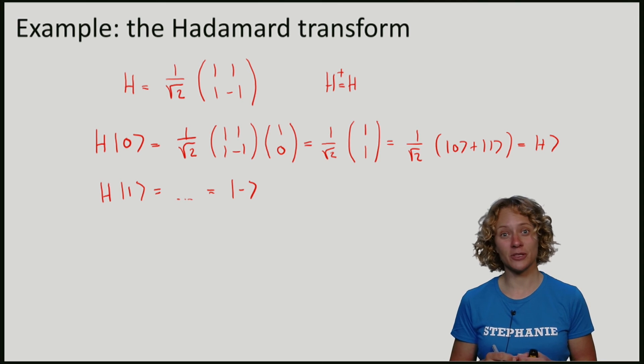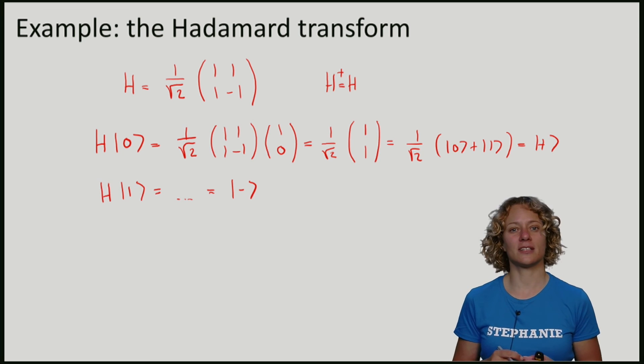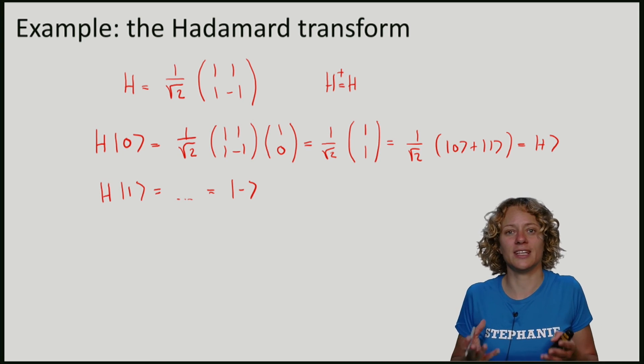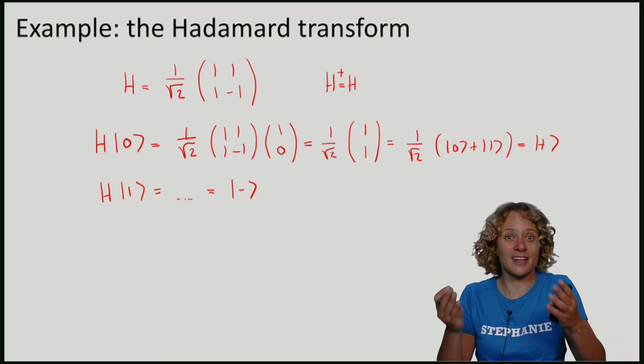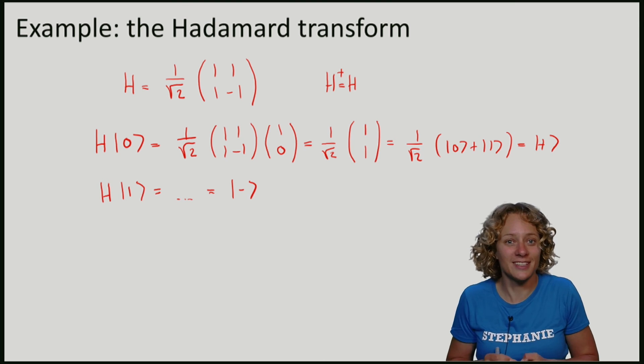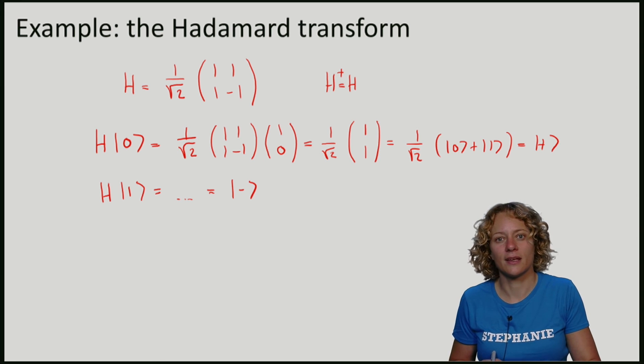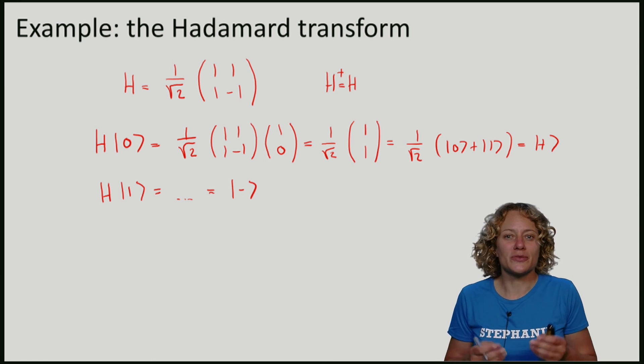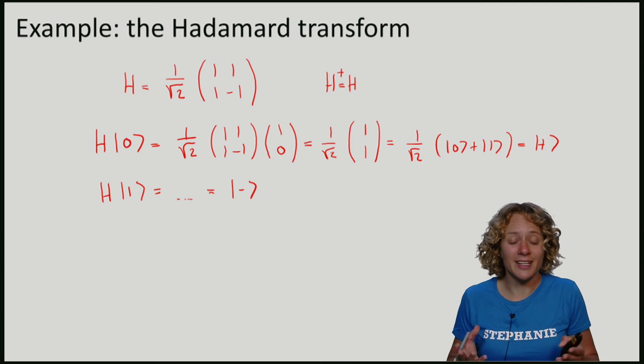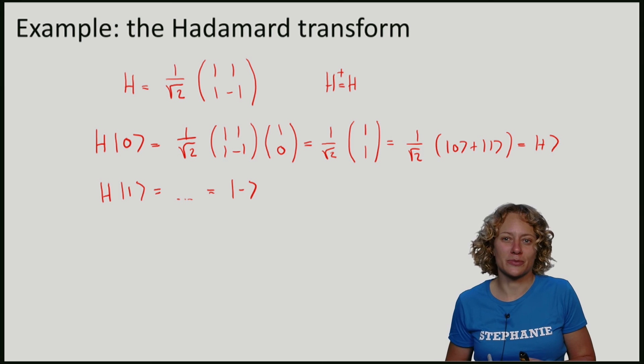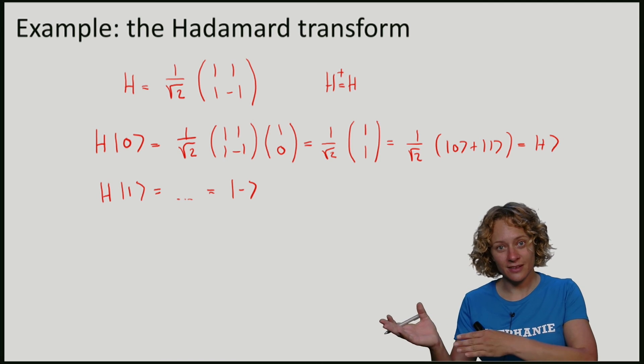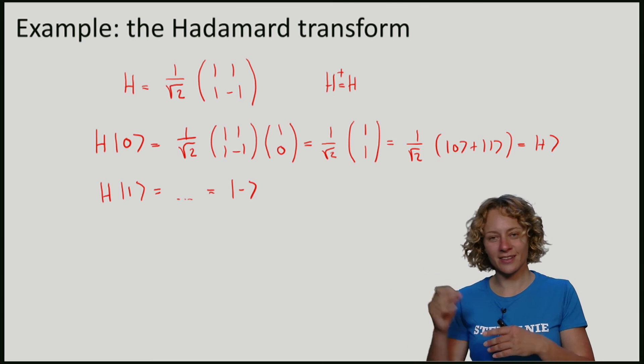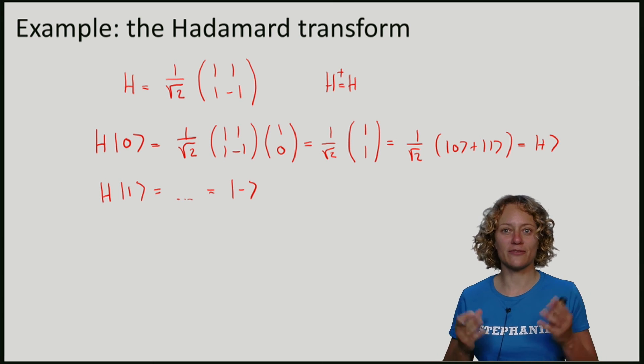Note that if we apply a unitary to an element of the standard basis, it also means that the transformation preserves the inner product. In fact, this was exactly the condition: U dagger U is equal to the identity. So of course we know that 0 and 1 are orthogonal in the beginning. So if we apply the Hadamard transform to them, we also must end up with two vectors which are orthogonal. So if U zero gives us plus, U one should give us minus, potentially up to some global prefactor in front.